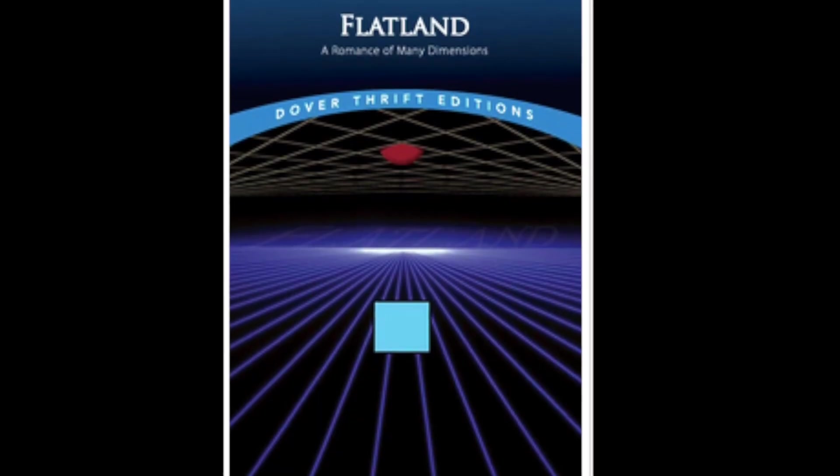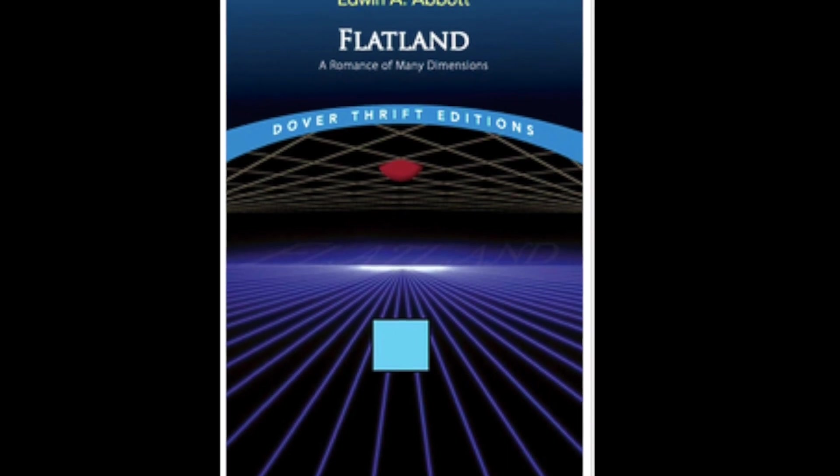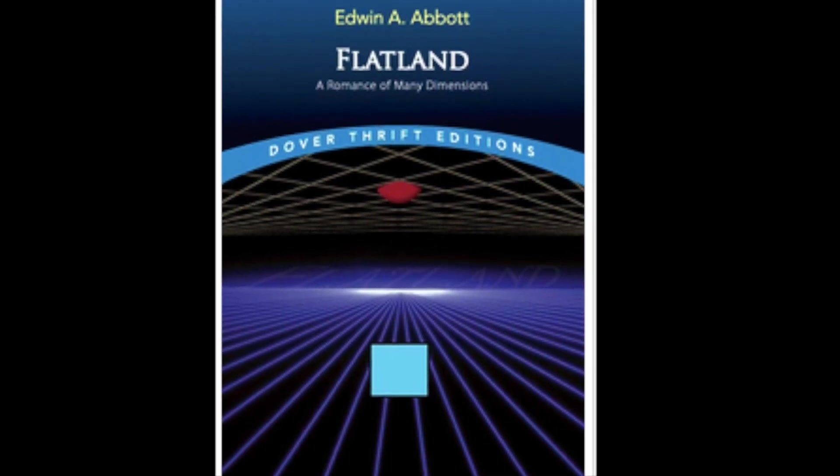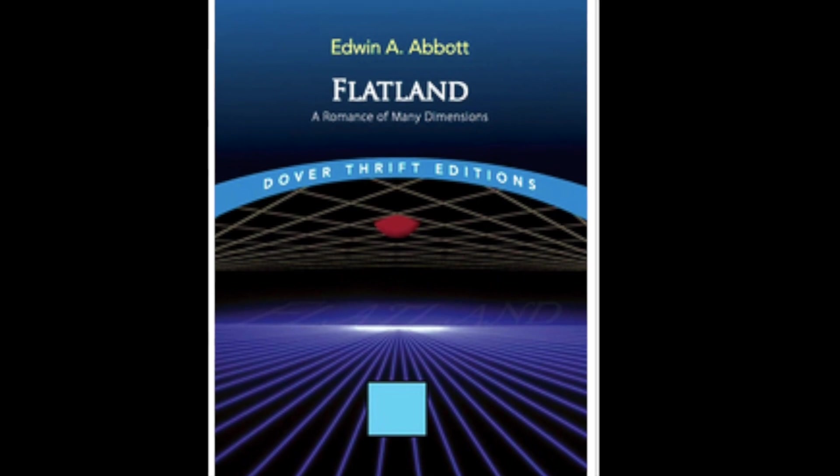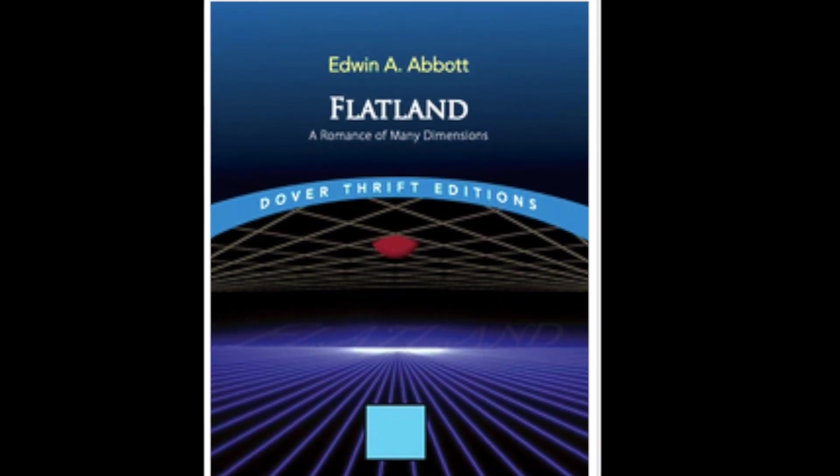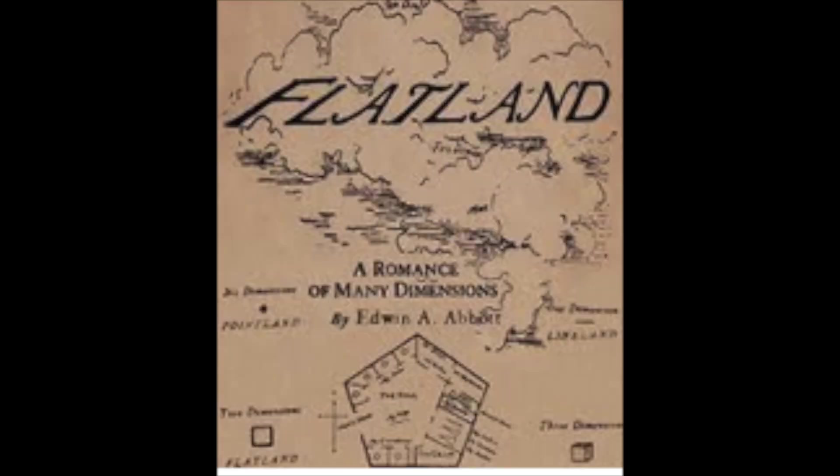If you've read the book Flatland, you'll remember that it was a two-dimensional world. It had length and width, but no thickness. It was hard to imagine exactly what that would be like. How could it have no thickness?